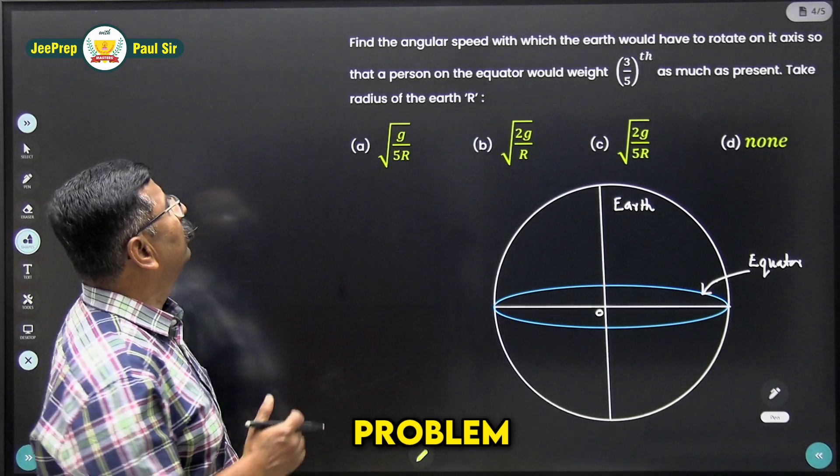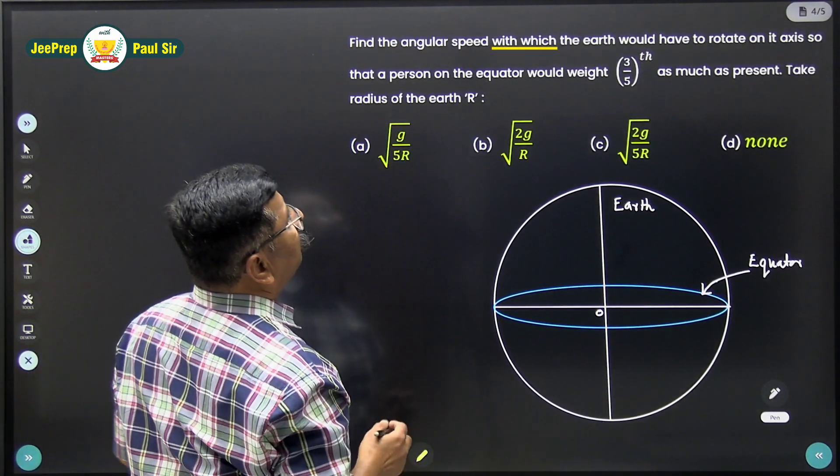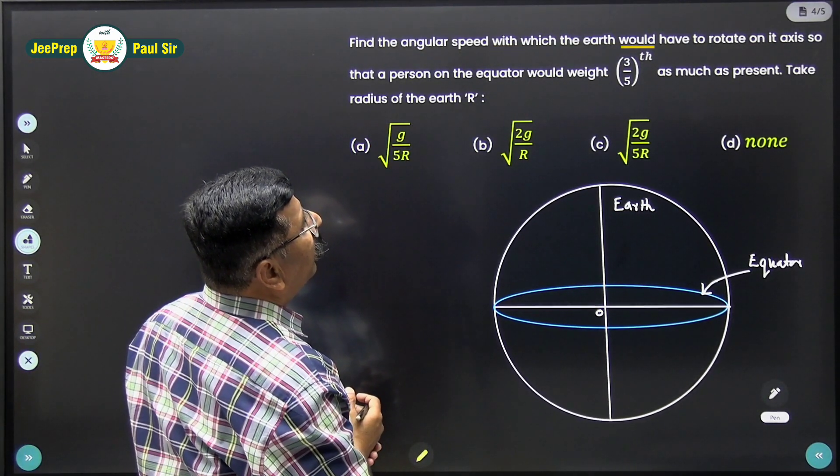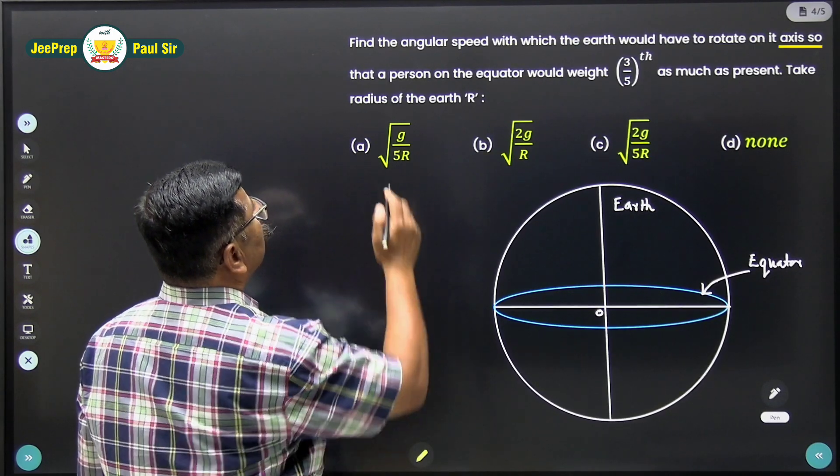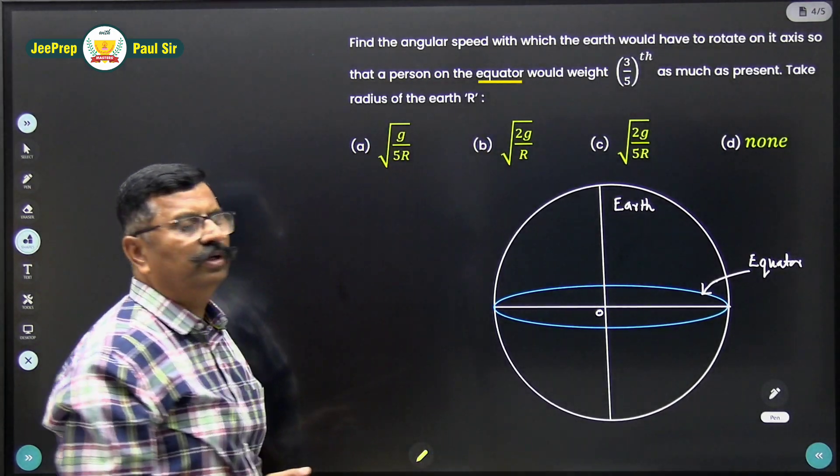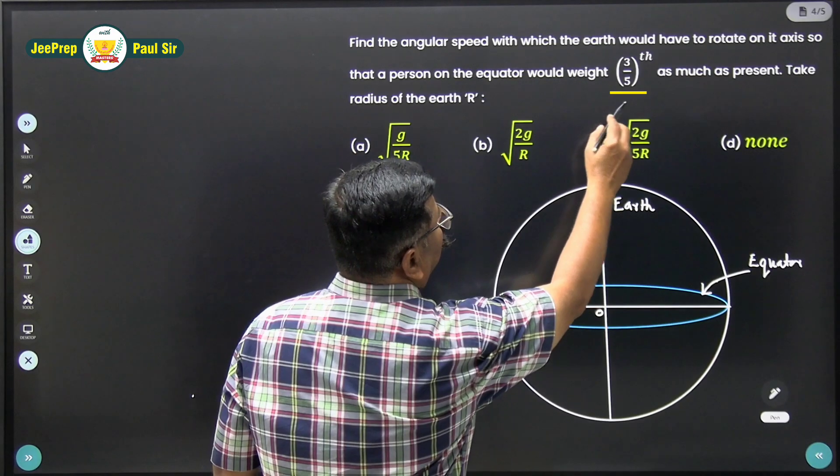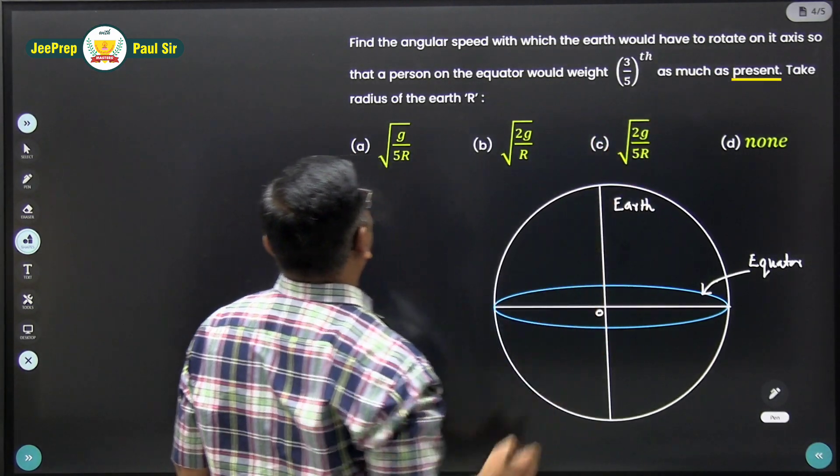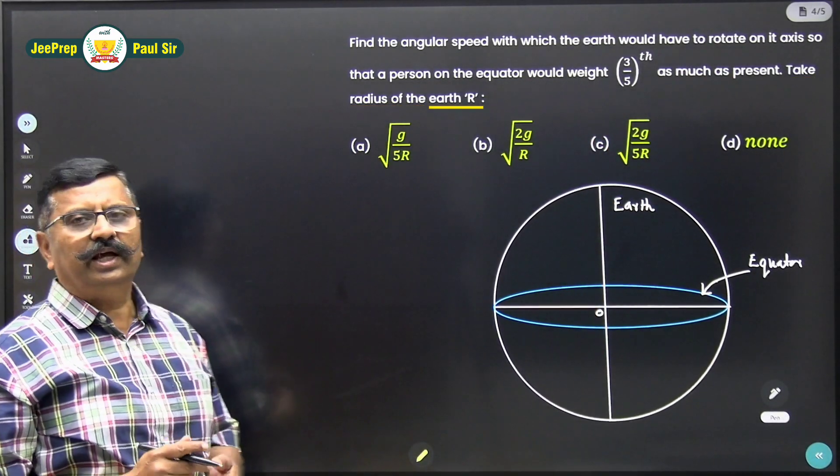Let's read the problem. Find the angular speed with which the earth would have to rotate on its axis so that a person on the equator would weigh 3/5 times as much as present. Take radius of the earth as r.